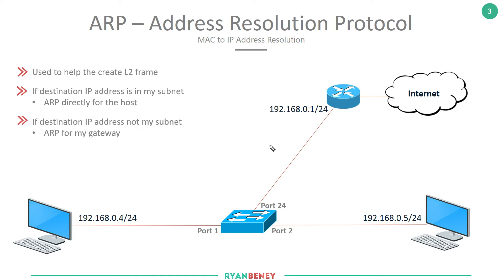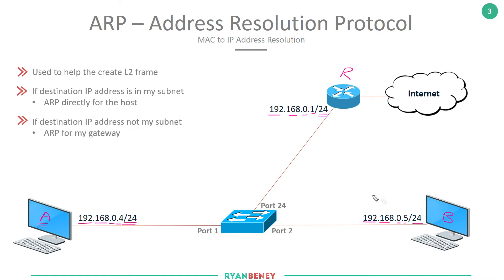Looking at this topology, we can see that we have PCA using 192.168.0.4/24, PCB which is 192.168.0.5/24, and a router utilising 192.168.0.1/24. Hopefully you've gone through the previous videos around IP addressing and subnetting and you're able to identify that all three of these devices are all inside the same subnet. Because of that, they would ARP directly for the host.